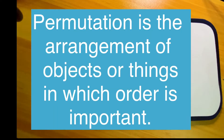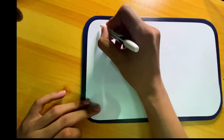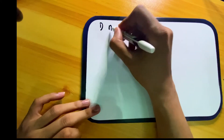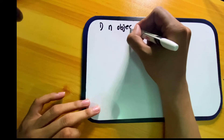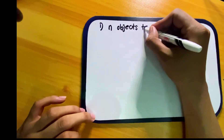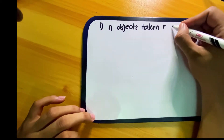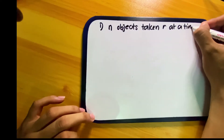Hello everyone. Today we'll cover permutations. A permutation is the arrangement of objects or things in which the order is important. There are four different types of permutations we will cover today. The first permutation is n objects taken r at a time.